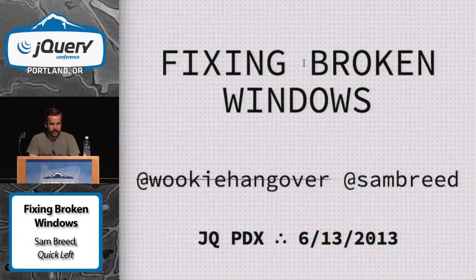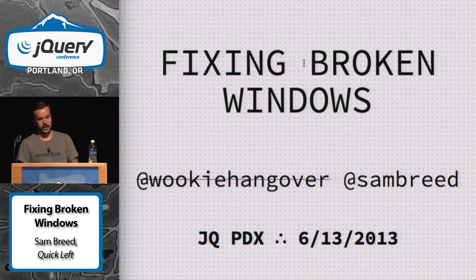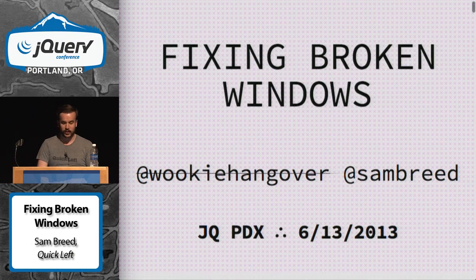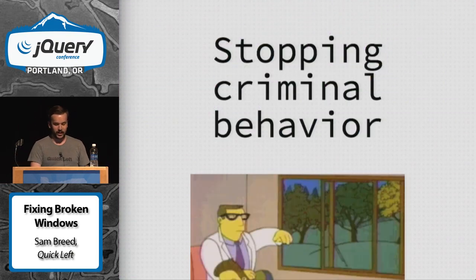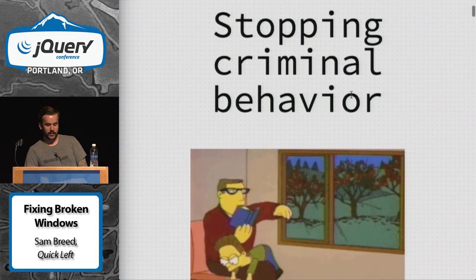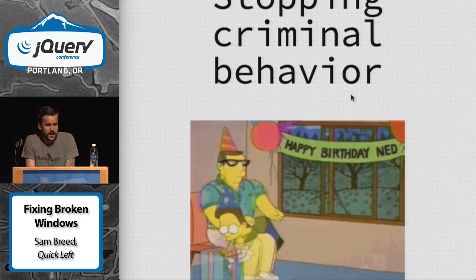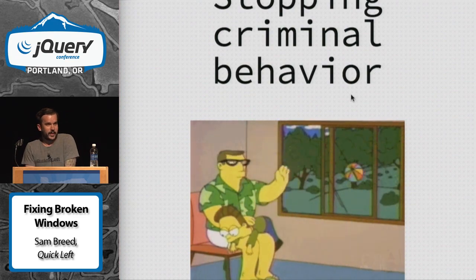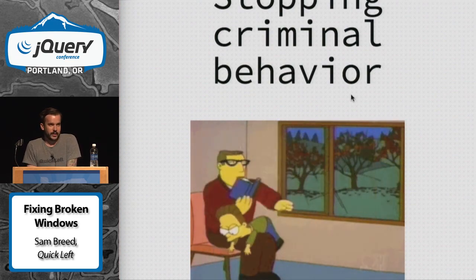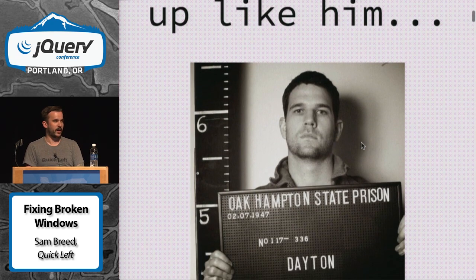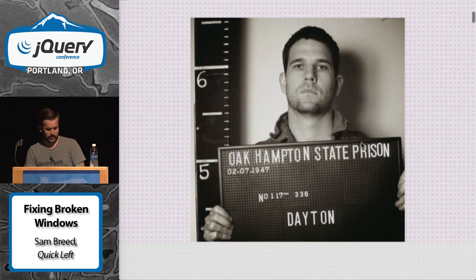This talk is about fixing broken windows. A broken window is anything in your software project that will slow you down and that you'll regret in the future. Essentially, it comes down to stopping criminal behavior — the rules you can follow so you don't end up in front-end jail for committing all sorts of crimes.